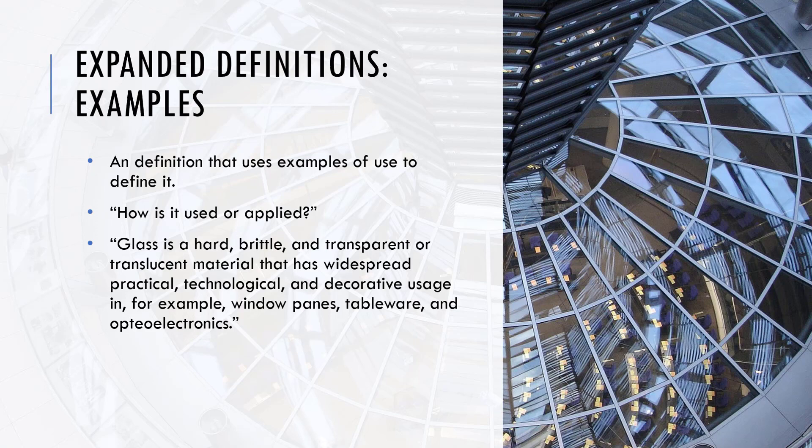Expanded definitions can also use examples — sometimes you just need to show where something is used or how it is applied. For instance: 'glass is a hard, brittle, and transparent or translucent material that has widespread practical, technological, and decorative usage in, for example, window panes, tableware, and optoelectronics.' You use examples to explain and define the meaning of a term.